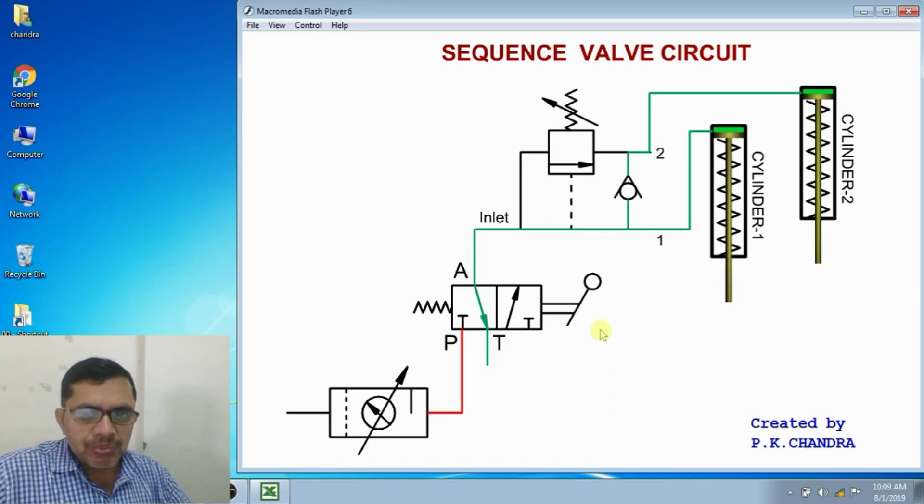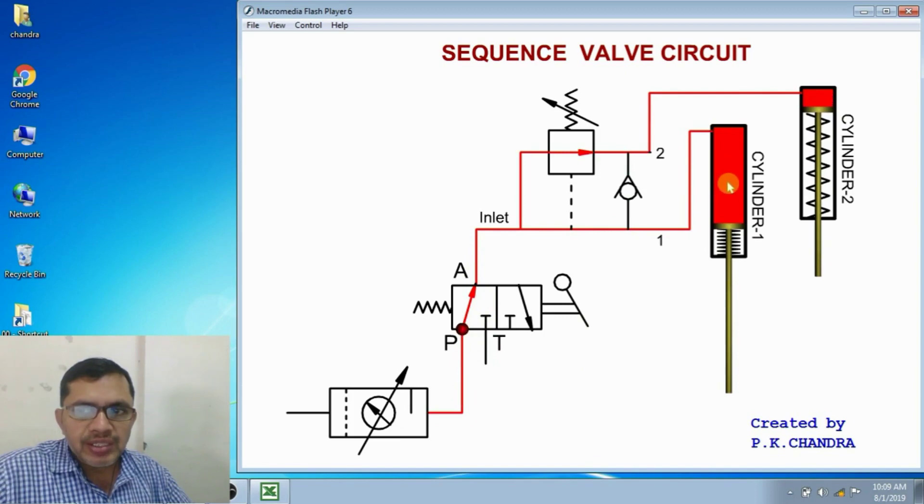When we keep the lever in the first position, P to A connection is there. Fluid flows to cylinder 1. Cylinder 1 will extend. And then after that, fluid flows to second cylinder. Cylinder 2 will extend. Means there is sequence in operation of these two cylinders. First cylinder extends first. The second cylinder will extend after completion of extension of first cylinder.